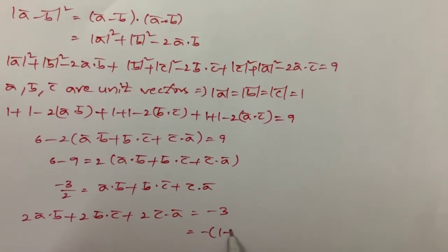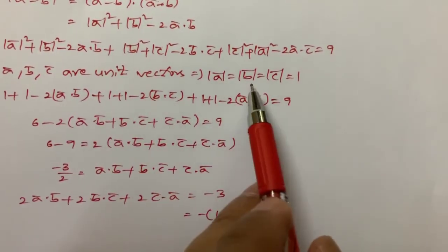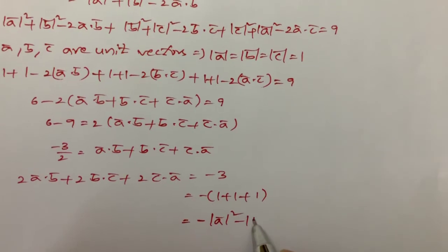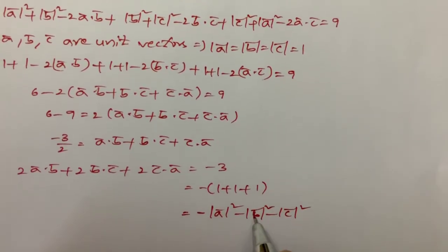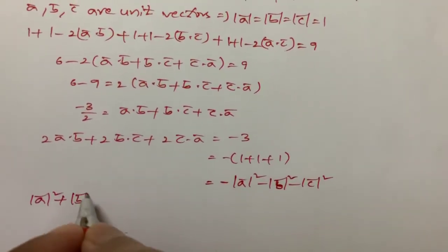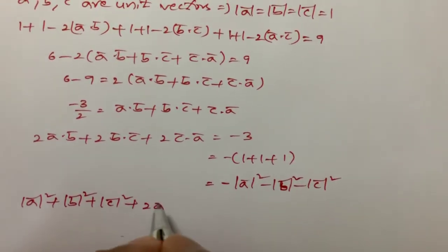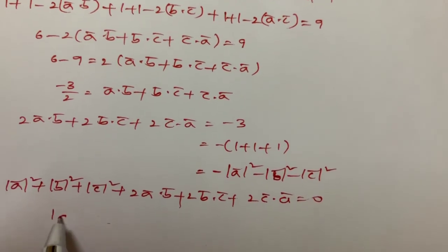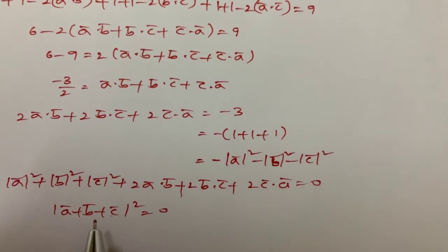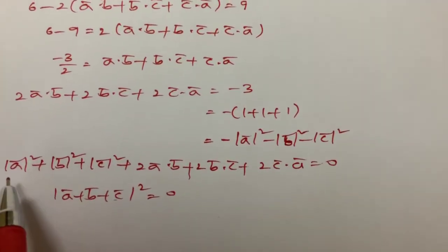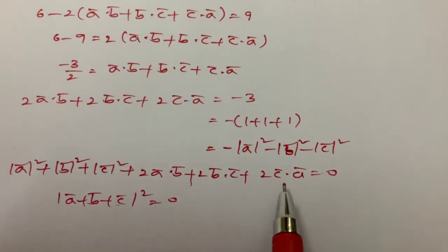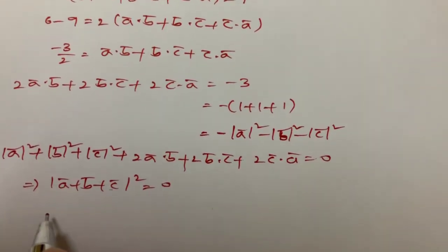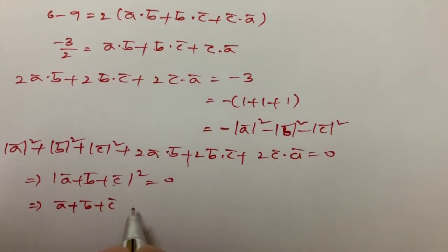We can rewrite this as 2(a·b) + 2(b·c) + 2(c·a) = -3, and note that -3 = -(1 + 1 + 1) = -(|a|² + |b|² + |c|²). Bringing everything to the left-hand side: |a-bar|² + |b-bar|² + |c-bar|² + 2(a·b) + 2(b·c) + 2(c·a) = 0. This is exactly |a-bar + b-bar + c-bar|² = 0, which means a-bar + b-bar + c-bar = 0 vector.